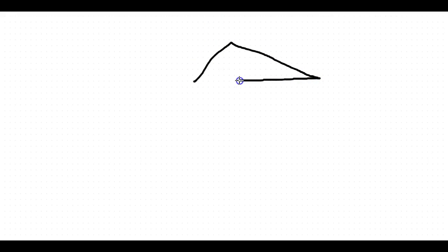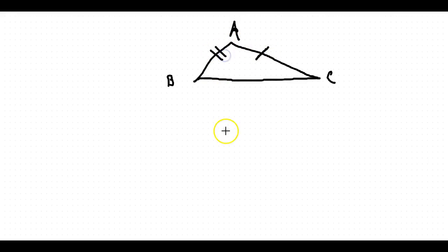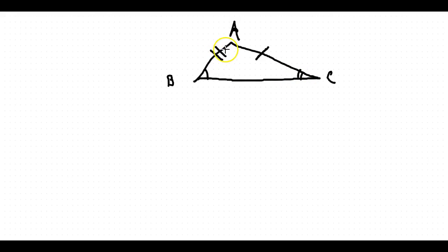Now we're talking about angle-side relationships. We have a triangle with points B, A, and C. Basically, if this segment is greater than that segment, then the angle opposite the longer side is greater than the angle opposite the shorter side. In words: if one side of a triangle is longer than another side, then the angle opposite the longer side has a greater measure than the angle opposite the shorter side.